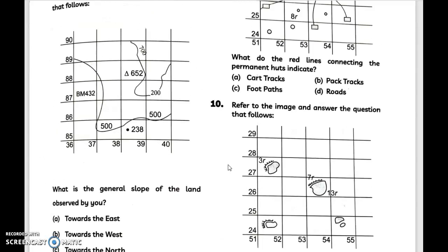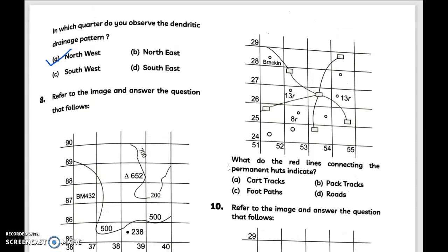Question number nine, this is the diagram - this is the toposheet. If you want a full chapter revision on toposheet, and in that video I have covered all the symbols, everything that is important, you can refer to that video. The link is in the description box and also in the i-card. So answer is option A, that is cart tracks.